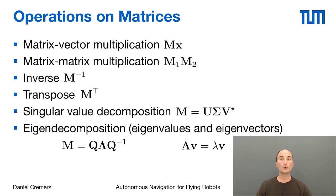There are many operations we can define on matrices. For example, we can simply define a matrix vector multiplication where we multiply the vector X by the matrix M. Furthermore, we can define matrix-matrix multiplications M1 times M2, provided of course that the dimensions of the matrices are consistent. We will see, for example, that this allows to model concatenations of rotations.